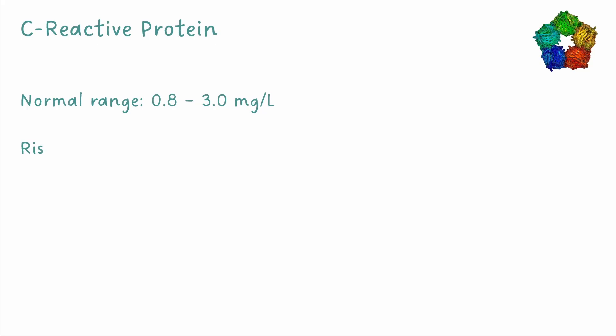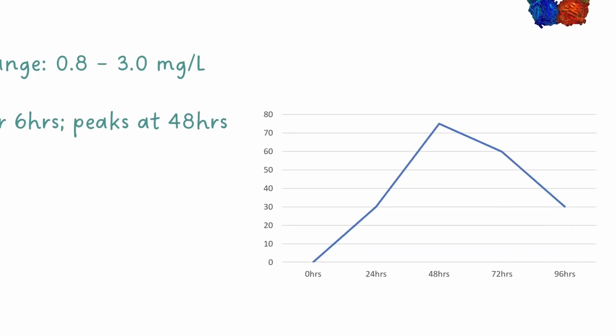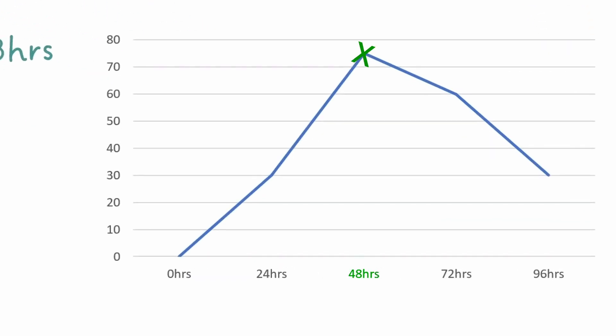CRP will begin to rise 6 hours after the source of inflammation and peak at 48 hours. This delay means CRP can lag 48 hours behind the inflammation source, i.e. CRP levels can reflect a patient's clinical state from 2 days ago.